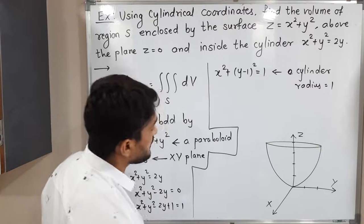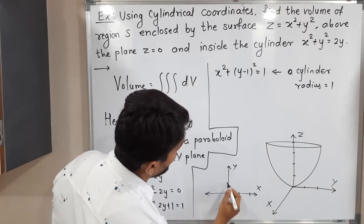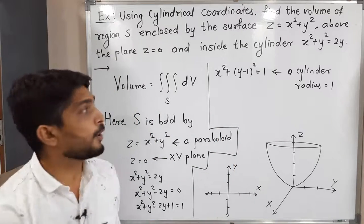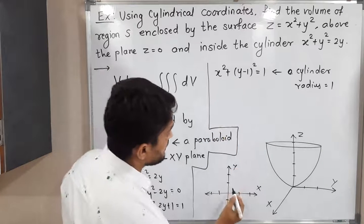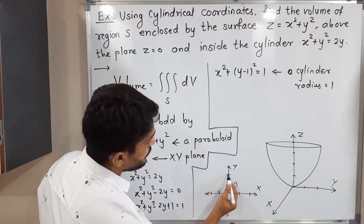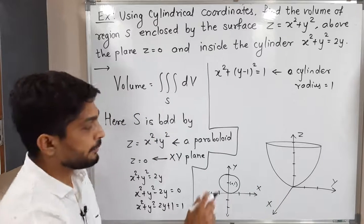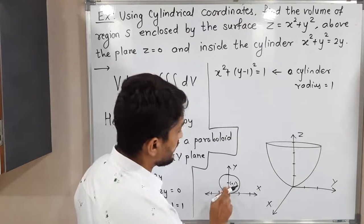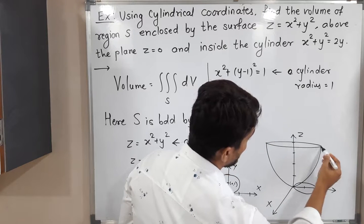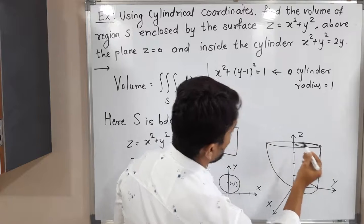Drawing in the xy-plane: the equation x² + (y − 1)² = 1 is a circle with center (0, 1) and radius 1. So in the xy-plane we get a circle, and in ℝ³ it becomes a cylinder. The center is on the y-axis, and I am drawing a rough sketch of this cylinder.